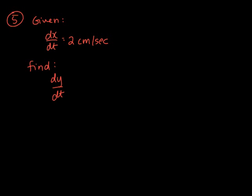The next problem we're going to look at is number 5 from our homework. They have given us some information in the original problem statement. They have told us that a point is moving along the graph of the given function such that dx/dt is 2 centimeters per second.